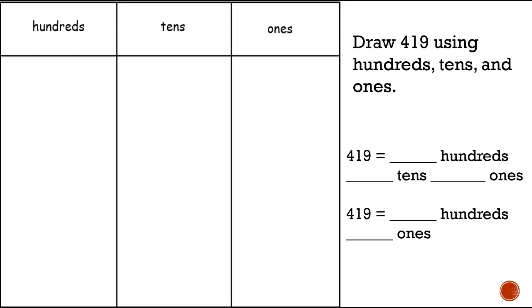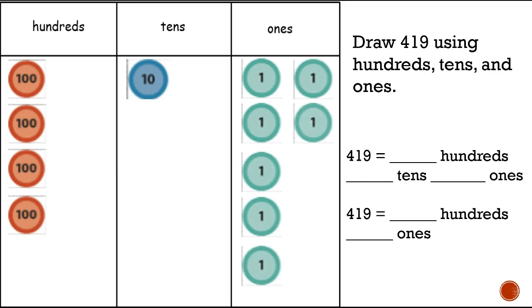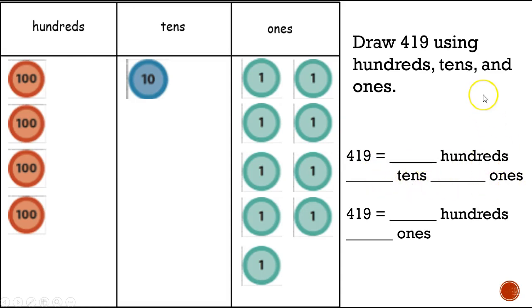Let's compare answers. I added one, two, three, four hundreds; one ten; and one, two, three, four, five, six, seven, eight, nine ones. Four hundred and nineteen equals four hundreds, one ten, and nine ones.